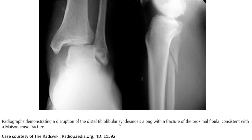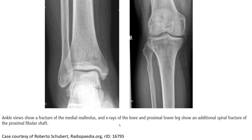This is an example of a radiograph which shows the disruption of the distal tibiofibular syndesmosis along with a fracture of the proximal fibula. This is a spiral fracture of the proximal fibula.